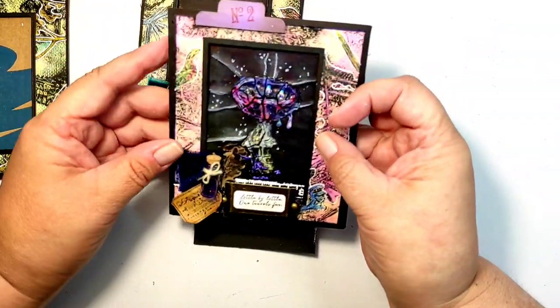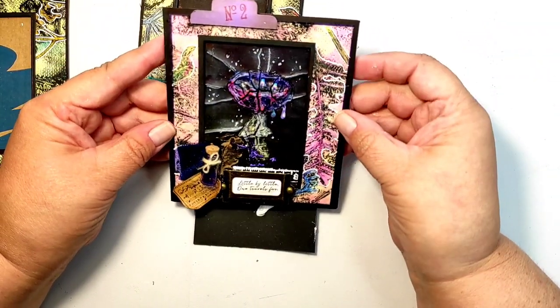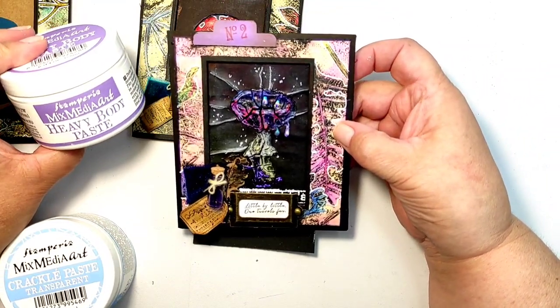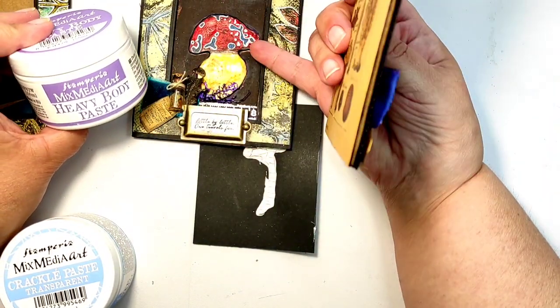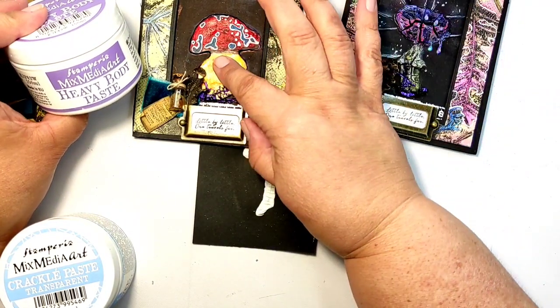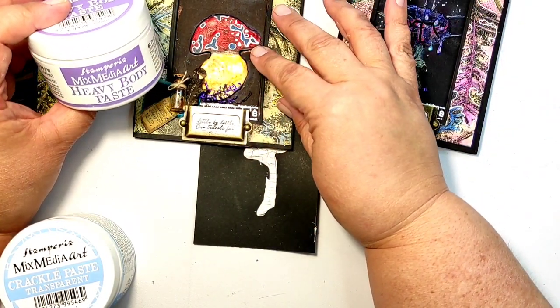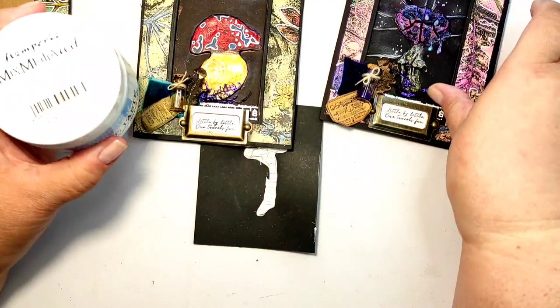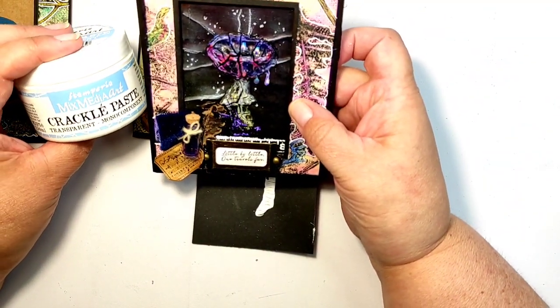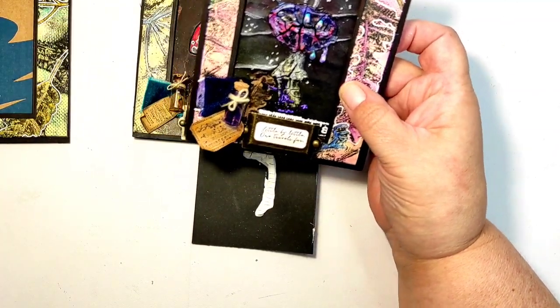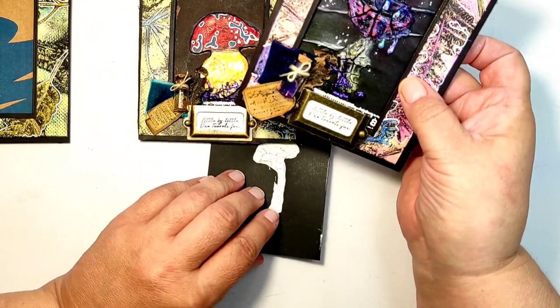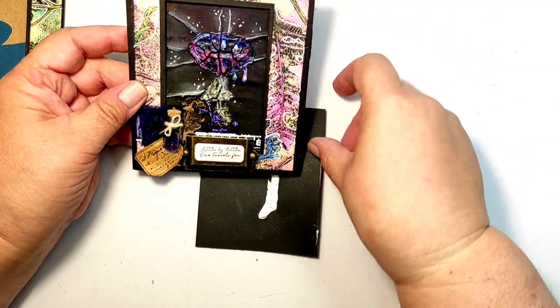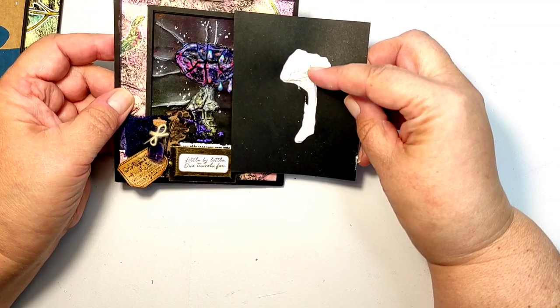And this one was interesting. I am still on the edge if I like it or not but for this mushroom I used Stamperia crackle paste but transparent paste and it behaved totally differently from the ordinary crackle paste. The crackle pieces as you see are very big. So basically the whole mushroom crackled in like six seven pieces and that's it.